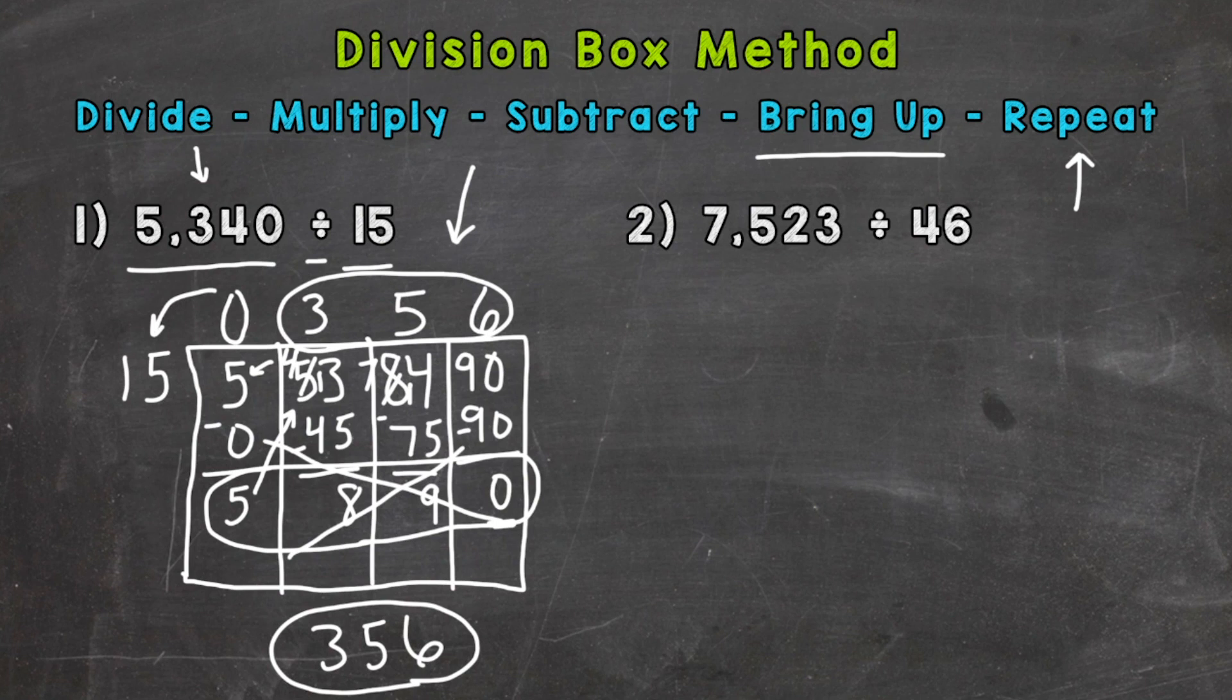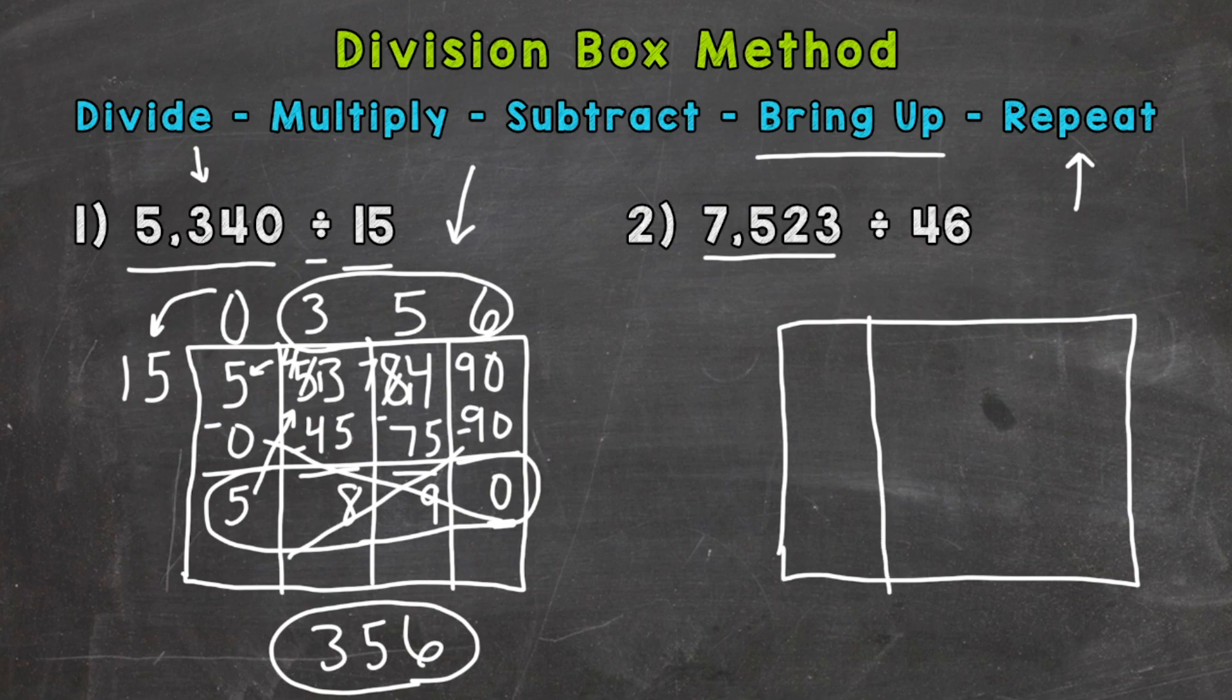So on to number 2 where we have 7,523 divided by 46. So the first thing we need to do is draw out our box. And again, we need four sections because we have four digits here with our dividend. All right. So we have 7,523. And we are dividing by 46.